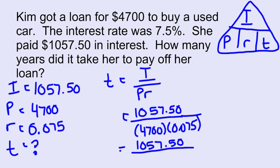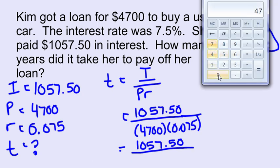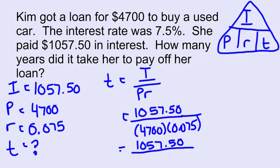I go ahead and multiply 4,700 times 0.075. My new denominator is 352.50.